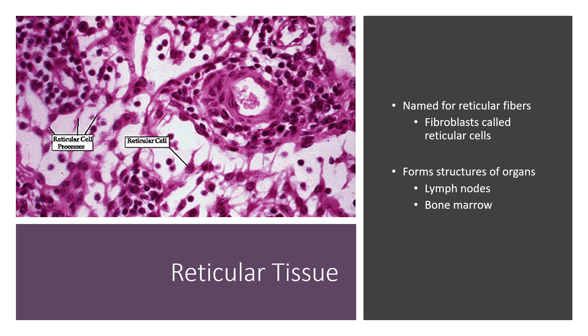Reticular tissue is a specialized type of loose connective tissue, named for reticular fibers. It consists of reticular cells — a type of fibroblast. This forms the structures of organs such as your lymph nodes and bone marrow, which are very important structures involved in the lymphatic system.